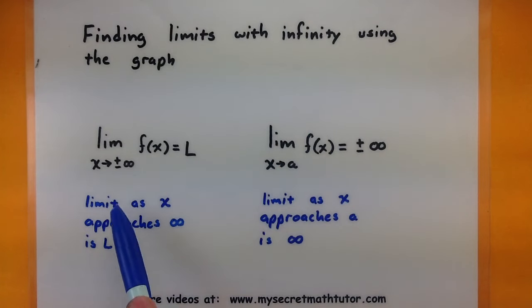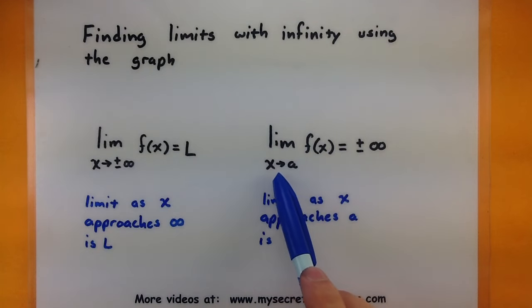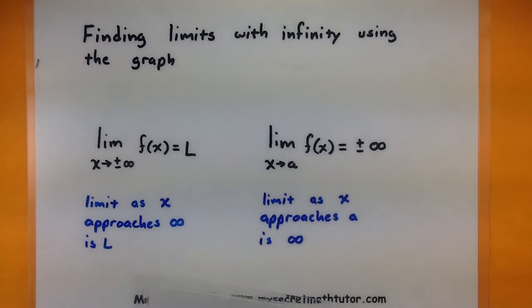We'll look at ones where x will be approaching infinity and we hope that our function approaches a value. We'll also look at ones where x is approaching a value, but the function actually wants to go to infinity or negative infinity. So watch for key features of the graph as we're observing this example.